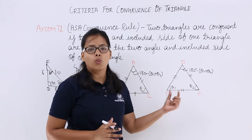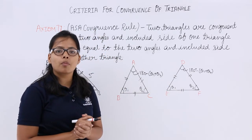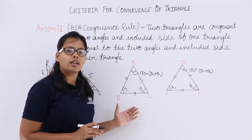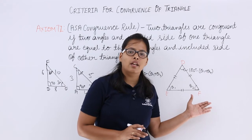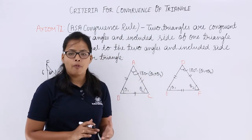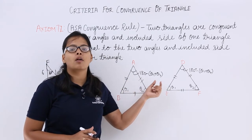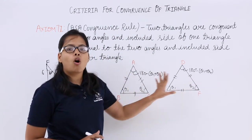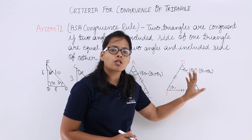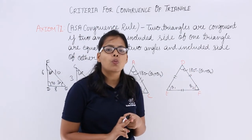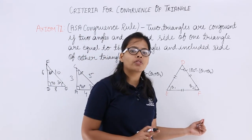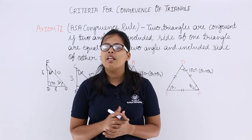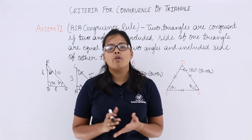Only then will you get two congruent triangles. So the conditions to remember are: if two angles of one triangle are equal to the two angles of another triangle, then their third angle will also be equal, because the third angle equals 180 minus the sum of the two angles. Additionally, any one side of one triangle must be equal to any one side of the other triangle. Then only will these two triangles be congruent. Based on this criteria and the criteria discussed before, I will be taking questions and problems in the next video lecture. Thank you.